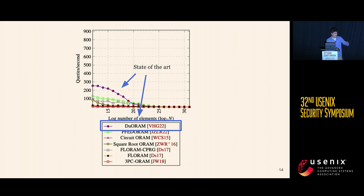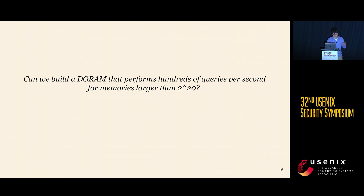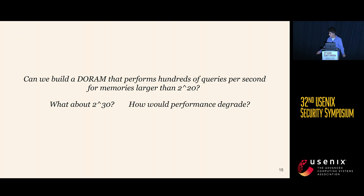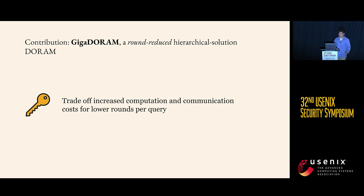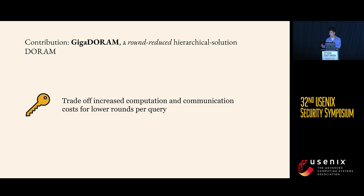The state of the art is DuoRM by Vadapalli, Henry, and Goldberg. Our research question was: can we build a Doram that performs hundreds of queries per second for memories larger than 2^20 — or even 2^30 — and how would performance degrade? Our contribution is Giga-Doram, a Doram protocol utilizing the hierarchical solution but with reduced rounds. The key insight is that we can trade off increased computation and communication for many fewer rounds per query.